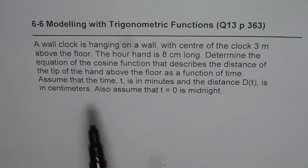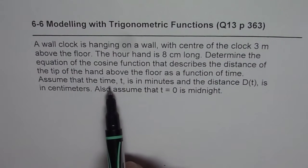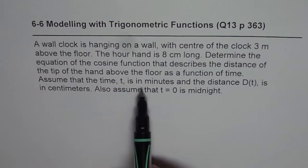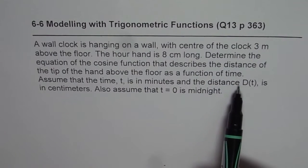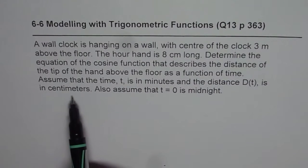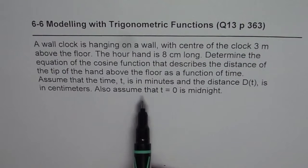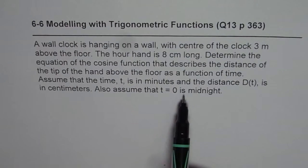Determine the equation of the cosine function that describes the distance of the tip of the hand above the floor as a function of time. Assume that the time t is in minutes and the distance d(t) is in centimeters. Also assume that t equals 0 is midnight.